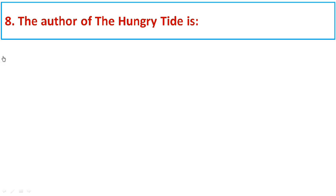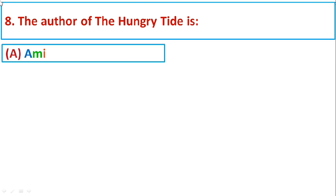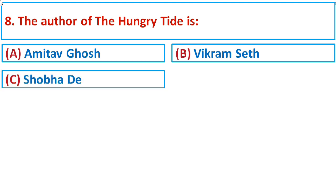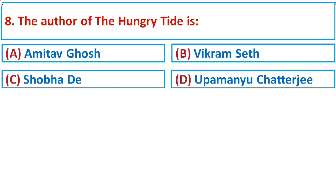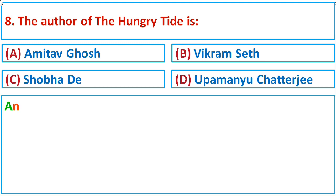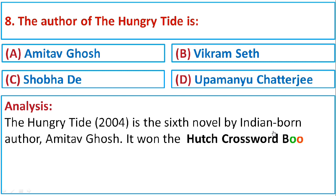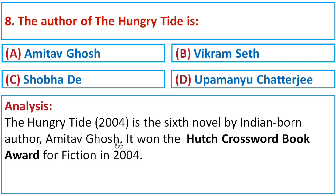Question number eight: The author of The Hungry Tide is Option A: Amitav Ghosh, Option B: Vikram Seth, Option C: Shobhaa De, or Option D: Upamanyu Chatterjee. The Hungry Tide (2004) is the sixth novel by Indian-born author Amitav Ghosh. It won the Hutch Crossword Book Award for Fiction in 2004. The correct option is A: Amitav Ghosh.